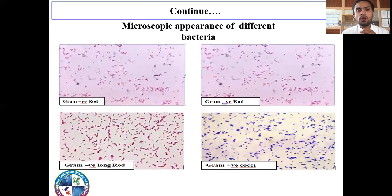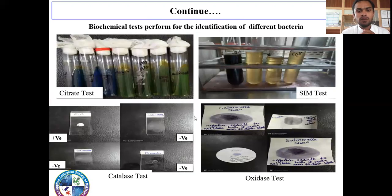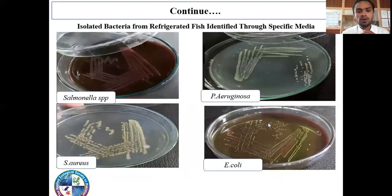This is the microscopic appearance of different bacteria: gram-negative bacteria, gram-negative rods, gram-negative long rods, and gram-negative cocci. Biochemical tests for the identification of different bacteria include the citrate test, SIM test, catalase test, and oxidase test for different bacterial isolates.